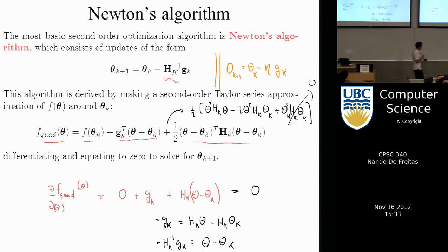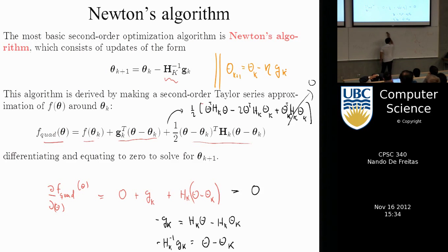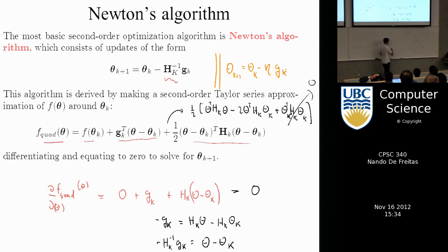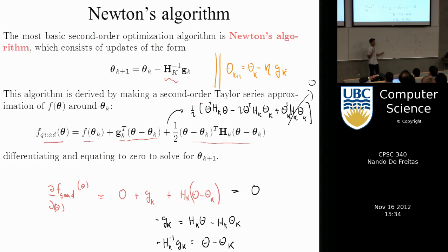If the error function is quadratic — which is the case for linear regression — how many steps does Newton's method need to find the minimum? One step. Because if you fit a quadratic to a quadratic, you get the same quadratic, so the next step is already the minimum.